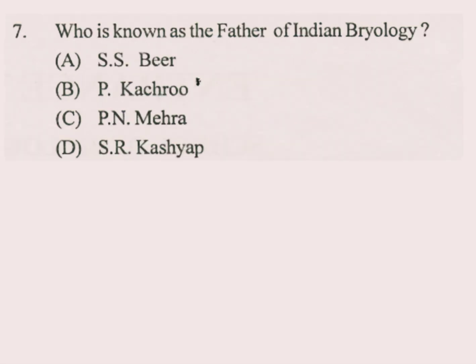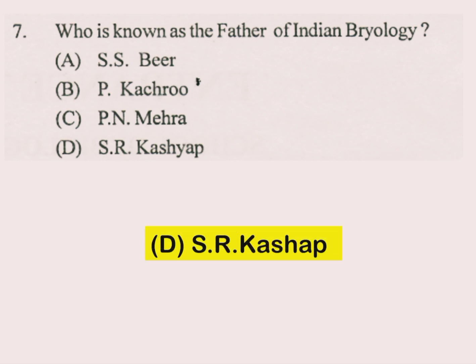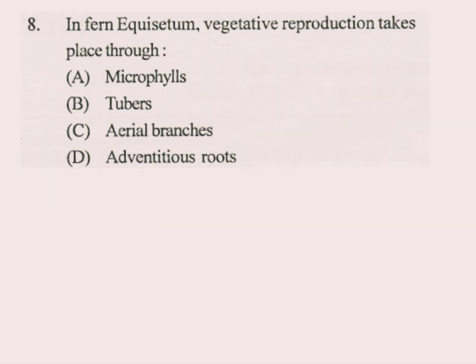Question number 7. Who is known as father of Indian biology? The answer is D part: S.R. Kashyap. Question number 8. In Equisetum, vegetative reproduction takes place through. The answer is B part: tubers.